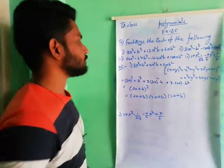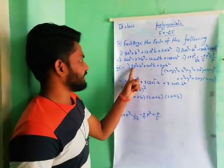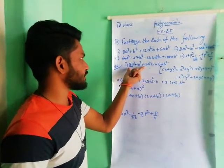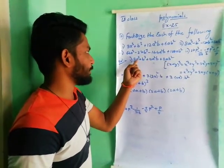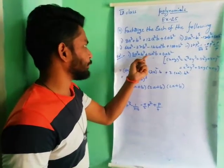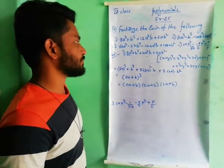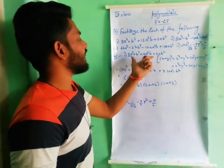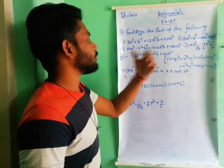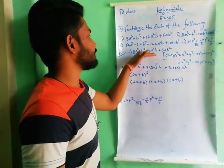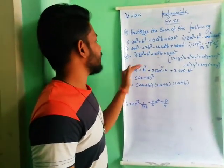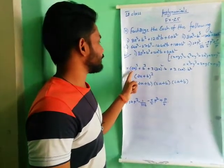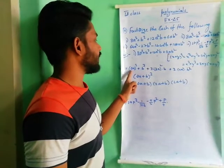Once again for 8a cube — first we have to observe the problem. We see a cube, b cube, a square b, and ab square terms are present, so it looks like the (a + b) whole cube format. So first of all I am converting 8a cube into (2a) whole cube.